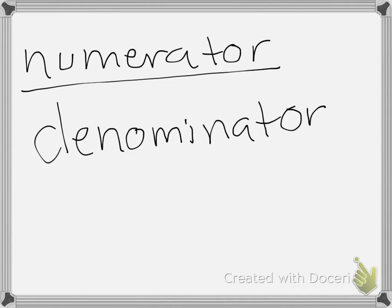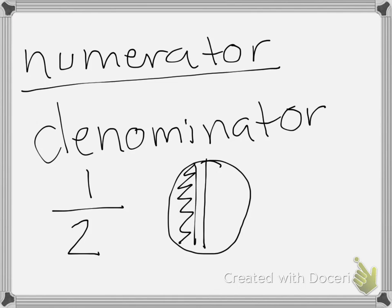Numerator, denominator. If I have the fraction 1 half, my numerator is 1, I have 1 piece out of my denominator, 2, out of 2 pieces. It would look like this. 1 half.